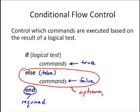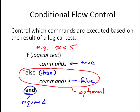Note the whole else side is optional. So as an option, we could just do one or more commands if the logical test — for example, x less than 5 — is true, do a set of commands, and then do nothing. We still need the end. Or if it's true, do one set of commands; if it's false, do another set of commands, and then end.